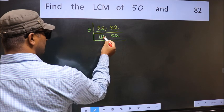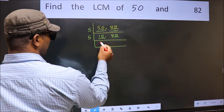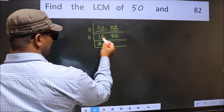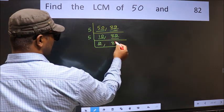Now here we have 10, last digit 0, so take 5. When do we get 10 in 5 table? 5 times 2 is 10. The other number, 82, not divisible by 5, so we write it down as it is.